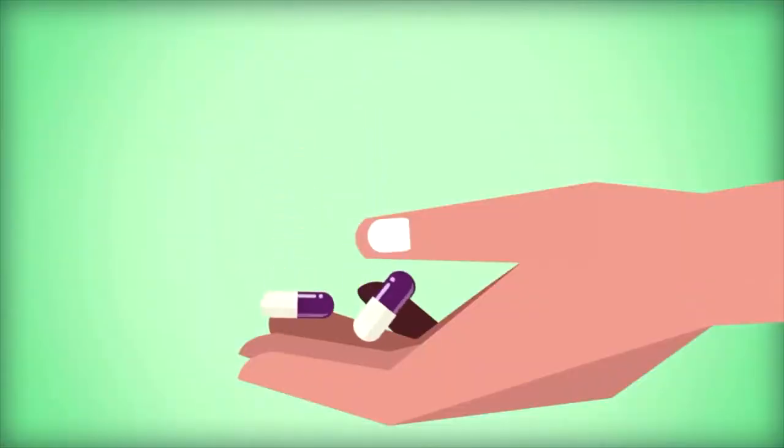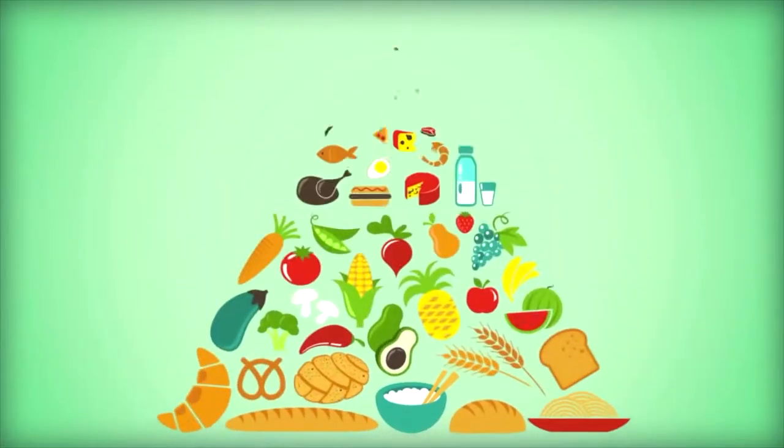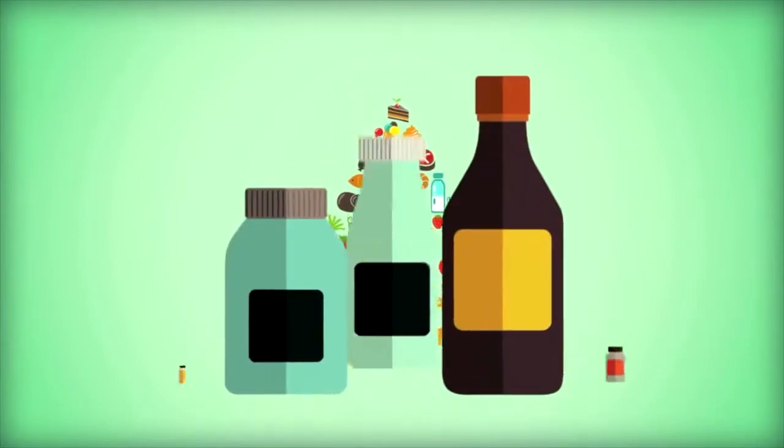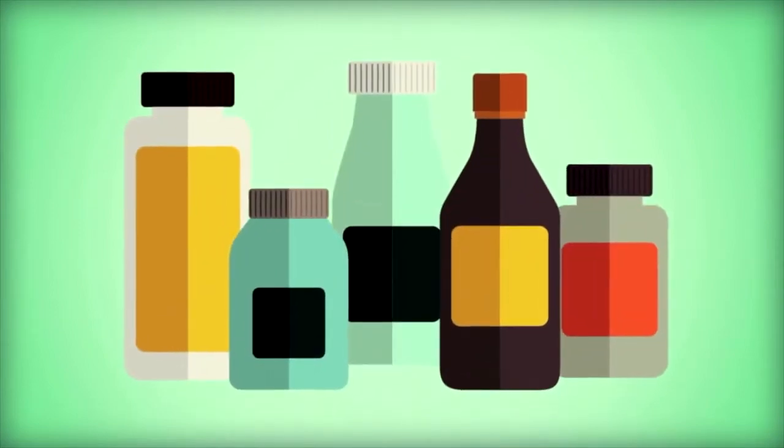Blood thinners include Coumadin, which is probably known by most people — it is a rat poisoning derivative. However, it's very difficult to control; it's affected by food, other medications, the time you take it, and the dose. The level rarely stays in the normal range we want, and it requires blood testing every week or two to monitor the effect.